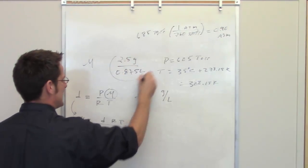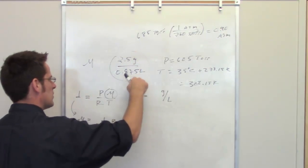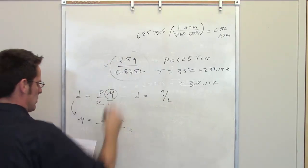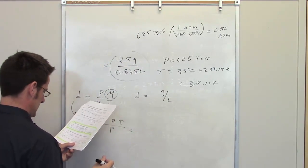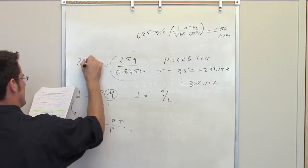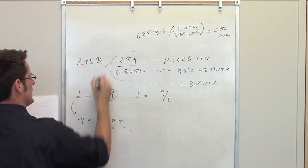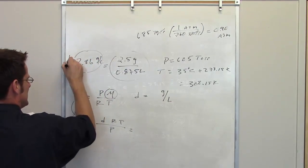Fortunately, I've been given the mass and the volume. If I divide one by the other, I end up getting a density of 2.86 grams per liter. That is equal to D, my density.